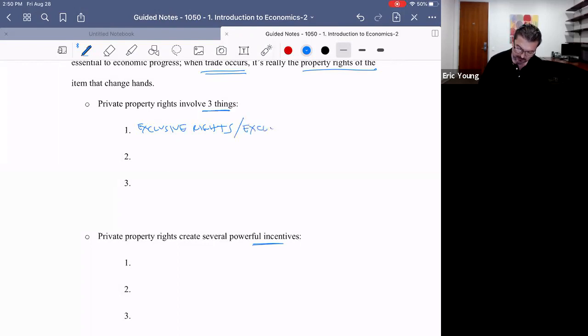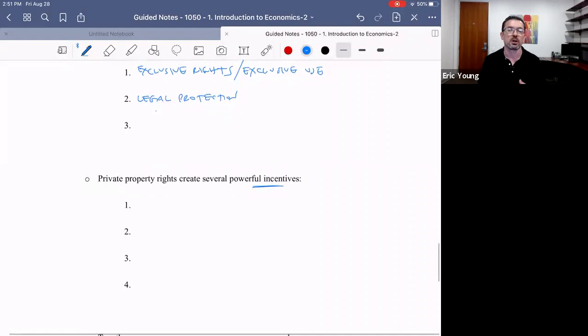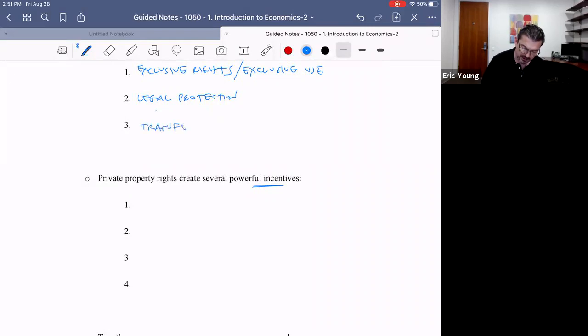The second thing, private property rights imply that there is legal protection against invasion from those who seek to use or abuse your property without your permission. So there's a protective function in property rights as well. Property rights are the exclusive use of the property; in addition, legal protection against those who wish to use or abuse your property without your consent. And number three, and this is the one that makes the most sense from an economics lens, but it's just one of three, property rights also involve the right to transfer or sell or exchange or mortgage the property.